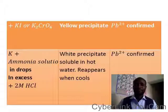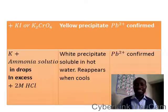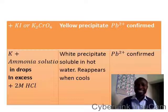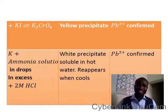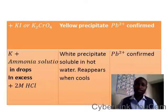K plus KI or K₂Cr₂O₇ — a yellow precipitate confirms the presence of Pb²⁺. K plus ammonia solution in drops, in excess, plus 2 molar HCl — if you have a white precipitate that is soluble in hot water and reappears when cooled, Pb²⁺ is confirmed.